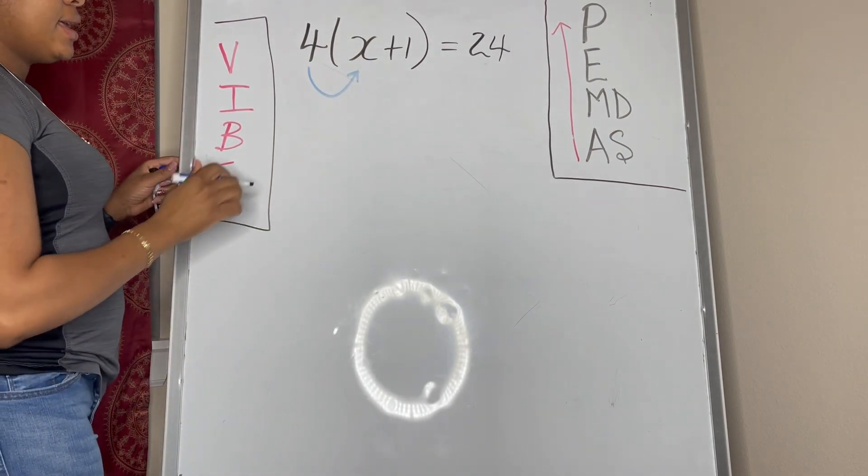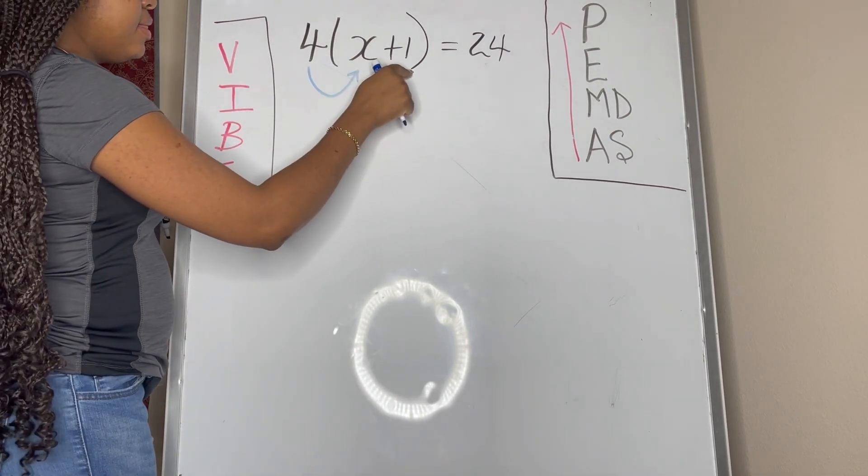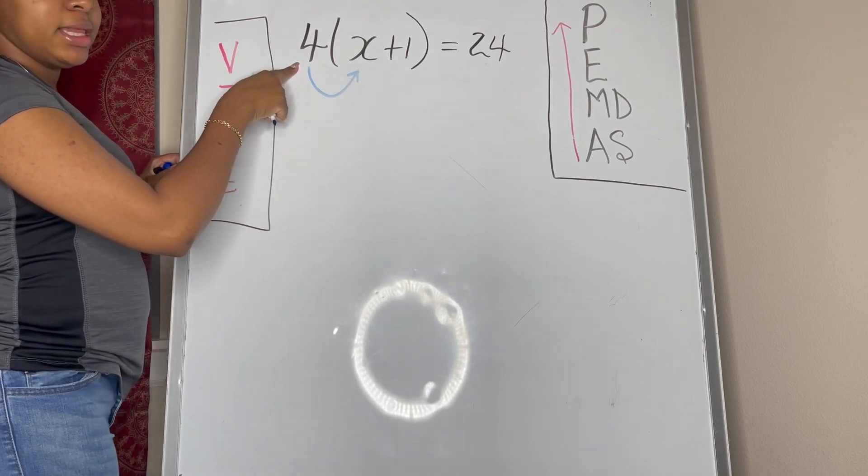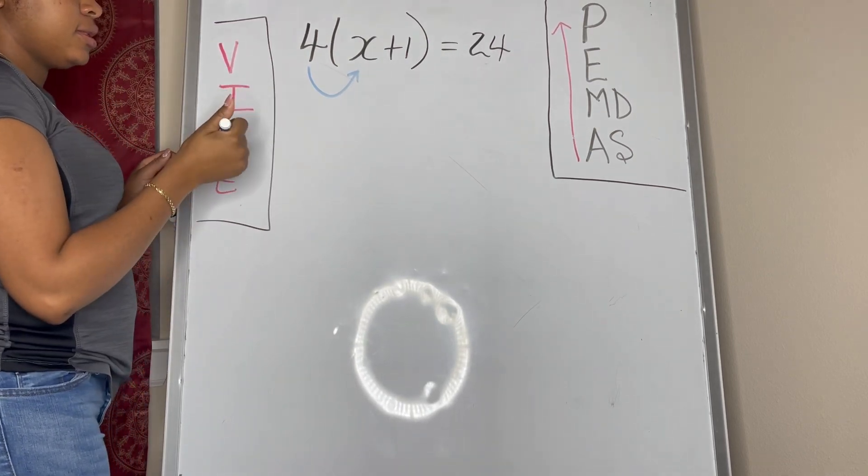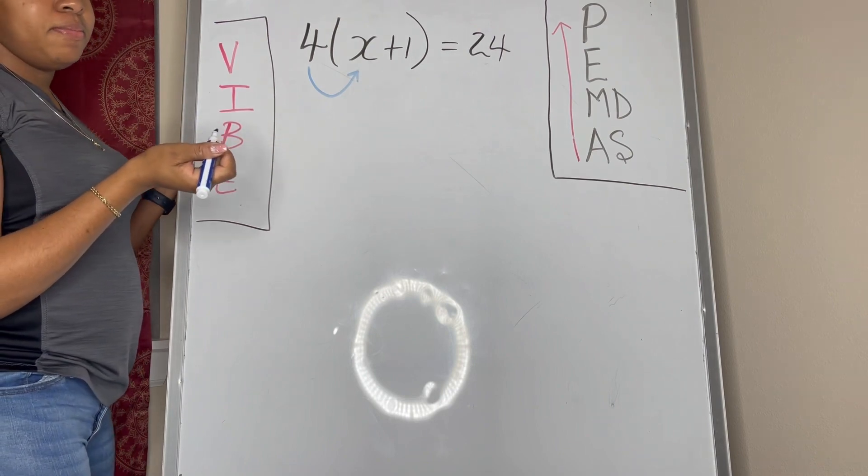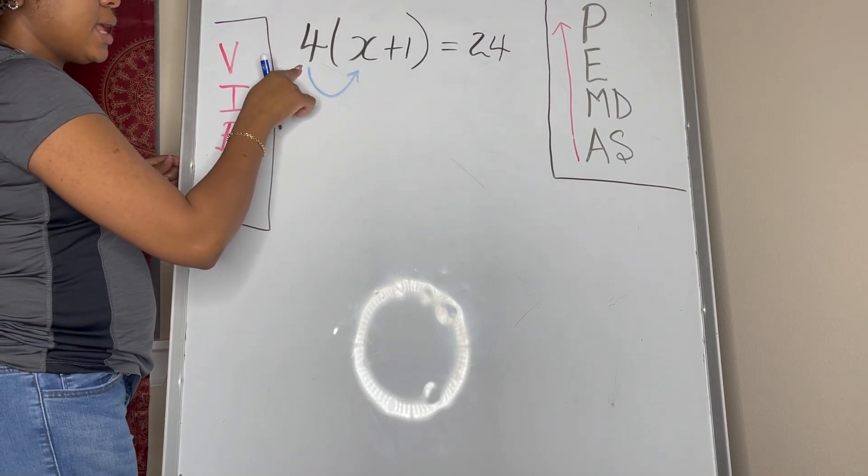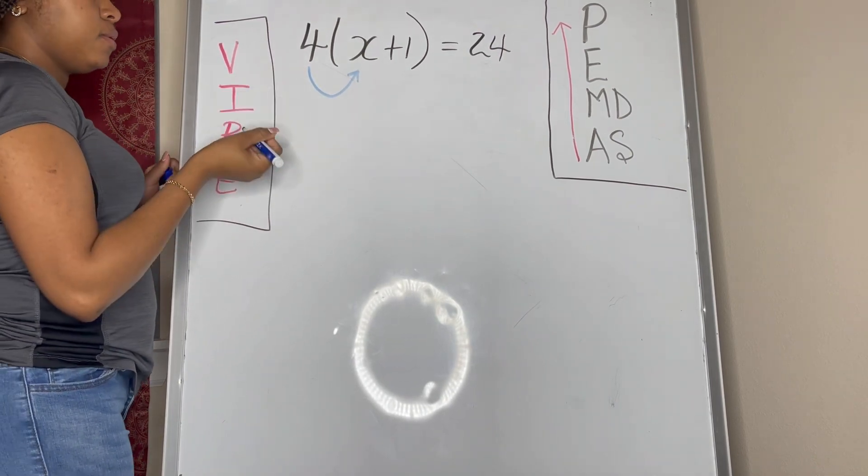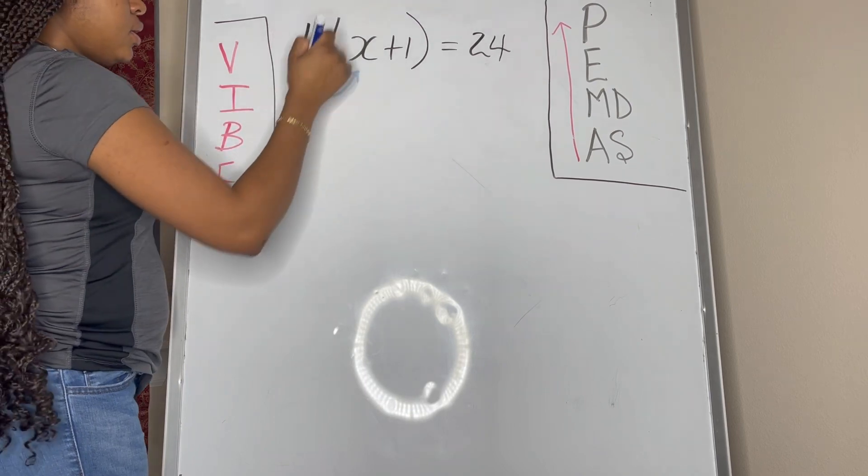And you know with the distributive property, you multiply everything that's inside the parentheses by the number directly in front of the parentheses, right? Or it could be behind it, but it's the number that's directly outside of the parentheses.